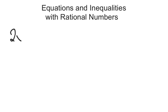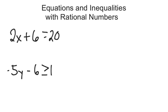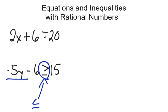An equation is something like 2x plus 6 equals 20, and we need to solve that. Inequalities, on the other hand, is something like negative 5y minus 6 is greater than or equal to 15. The big trick with any inequality is we solve it just like a regular equation, except if the number with the variable ends up being negative, the inequality symbol is going to have to be switched. Whenever you multiply or divide by a negative number, the inequality symbol has to be flipped.